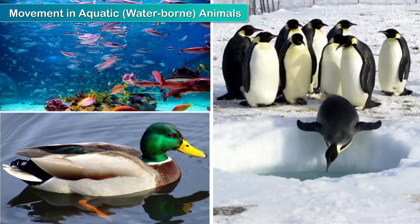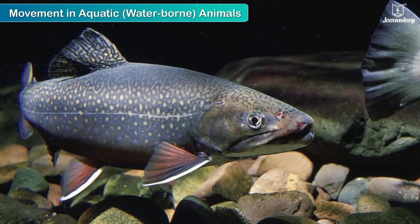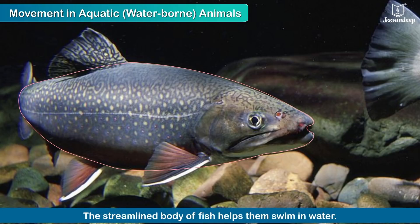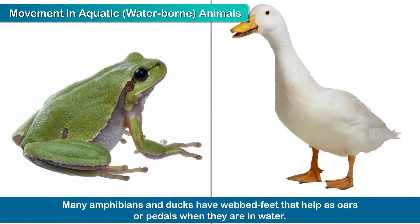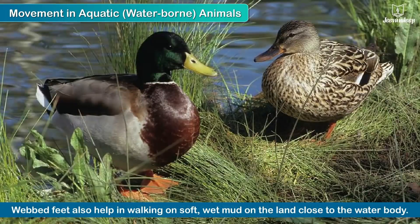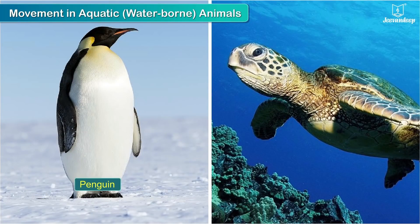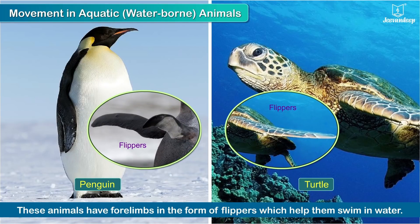Fish are an excellent example of adaptation in animals. Their streamlined body helps them swim in water, and their fins help them move, balance and change direction as they move through the water. Many amphibians and ducks have webbed feet which help them as oars or pedals when in water, or to walk on soft wet mud near a water body. Penguins, aquatic flightless birds, as well as sea turtles have their forelimbs in the form of flippers which help them swim in water.